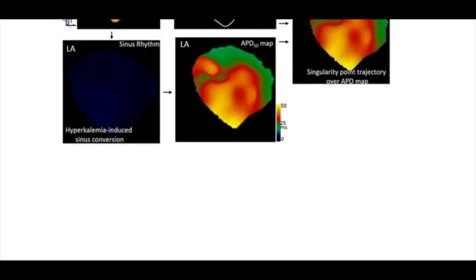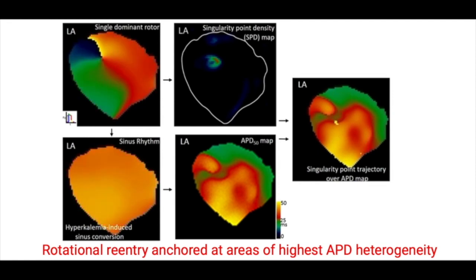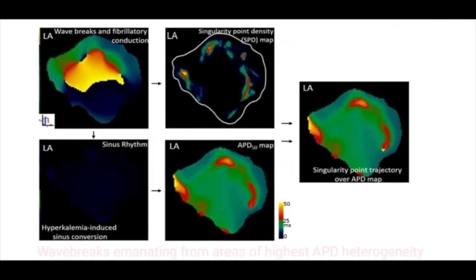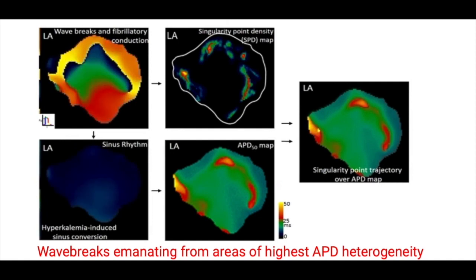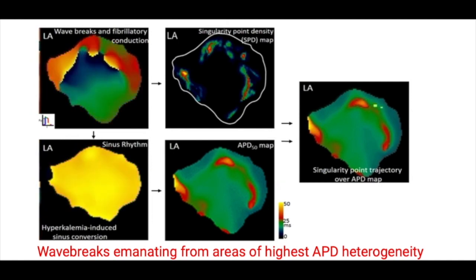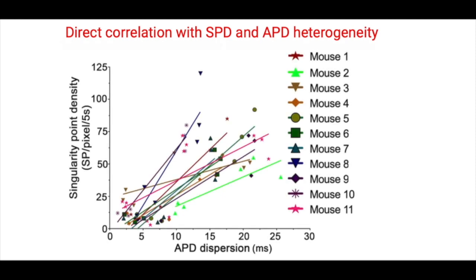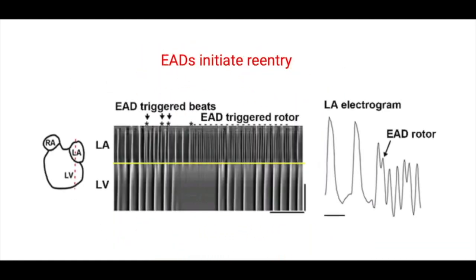Here we show a phase movie of rotational reentry in the mouse left atrium. Once converted to sinus rhythm, you can see that the singularity point density correlates with the area of highest action potential duration heterogeneity during sinus rhythm. We saw similarly during patterns of wave breaks that they emanated from areas of highest action potential duration heterogeneity appreciated during sinus rhythm, and we were able to derive a direct correlation. Here we show in this graph the relationship between the singularity point density and the areas of greatest action potential duration heterogeneity. Time-space plots of the F1759A double transgenic mice show that early afterdepolarizations trigger reentry causing atrial fibrillation.